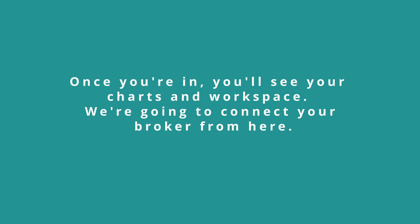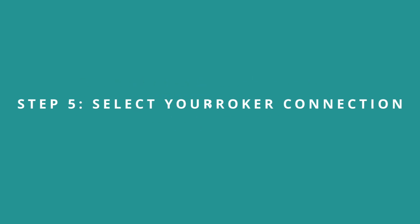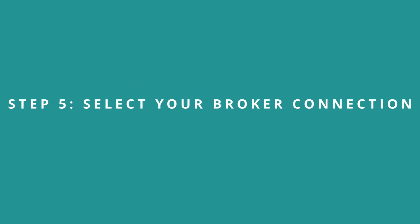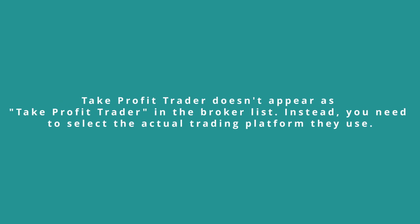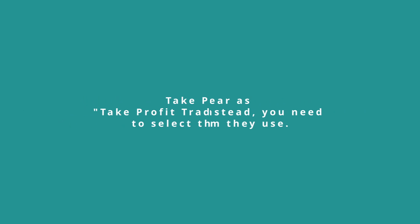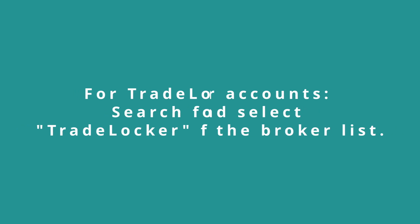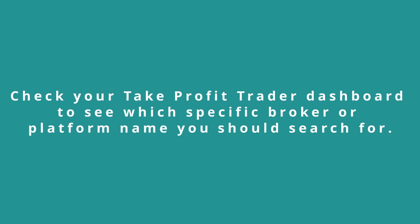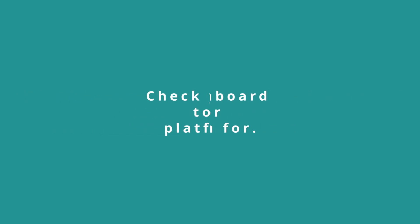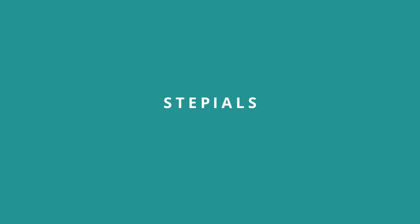You will see a drop-down menu with various brokers and platforms. Step five is to select your broker connection. Take Profit Trader doesn't appear as Take Profit Trader inside TradingView — instead you'll need to select the actual trading platform they use. For TradeLocker accounts, search for and select TradeLocker from the broker list. For other platforms, check your Take Profit Trader dashboard to see which broker or platform name to search for. Once you find the correct platform, click on it to begin the connection process.